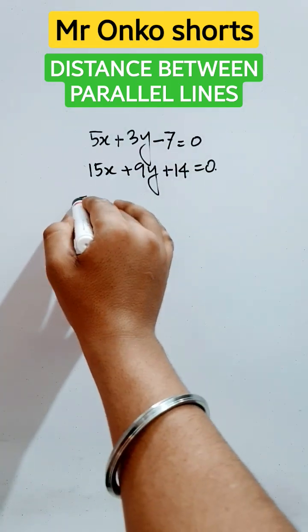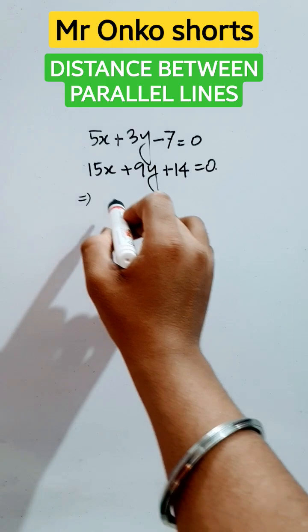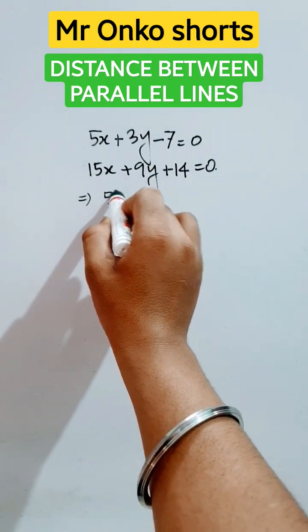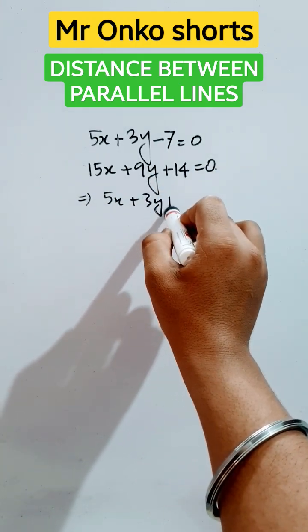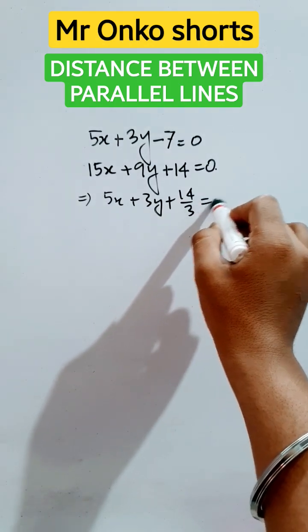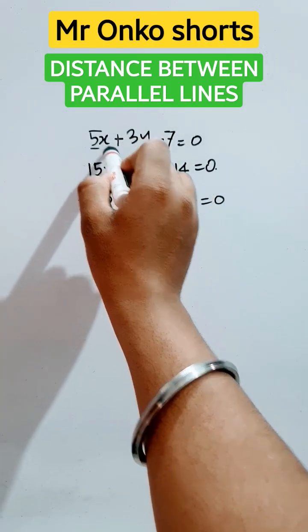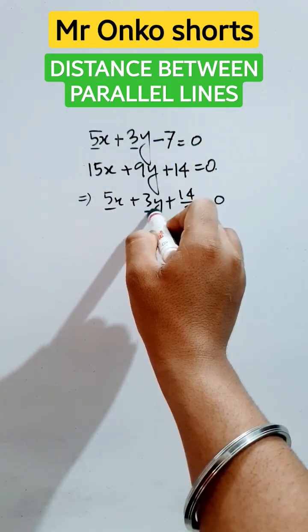Now first, customize this straight line equation. Divide both sides by 3, it will be 5x plus 3y plus 14 by 3 equals 0. So it's clearly visible that the coefficients of x and y are in the same ratio, so the straight lines are parallel.